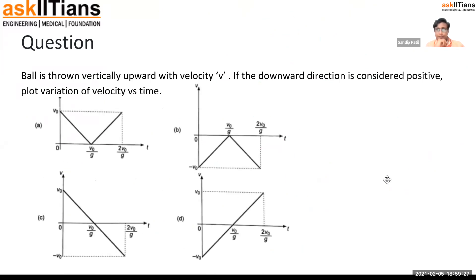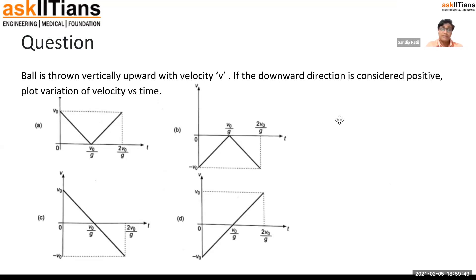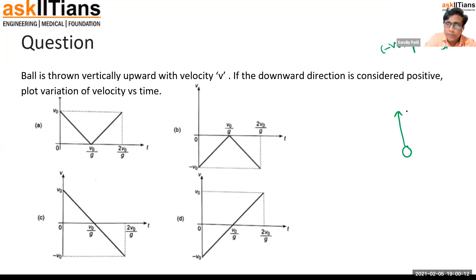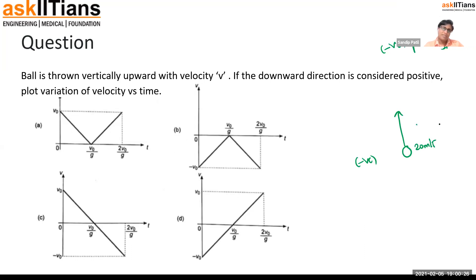Next problem: a ball is thrown vertically upward with velocity v. If the downward direction is considered positive (reversed sign convention), plot the velocity versus time graph. Since downward is positive, upward is negative. So the initial velocity when throwing the ball upward is negative.